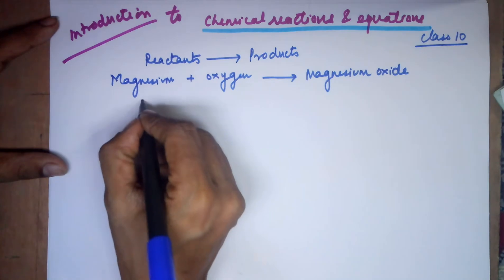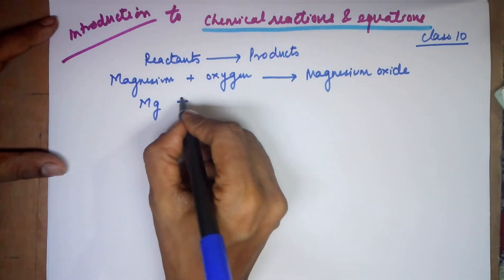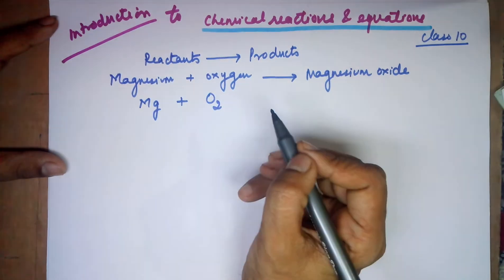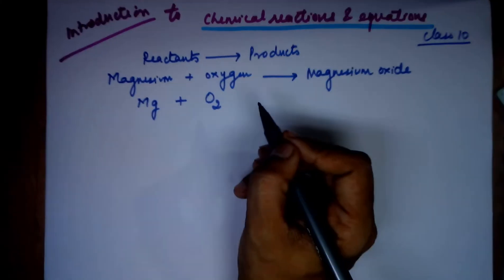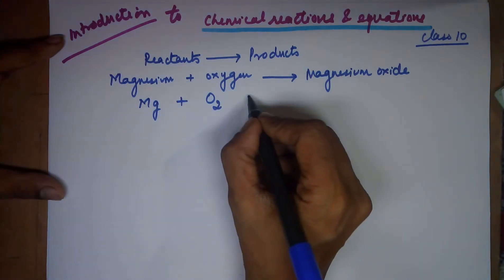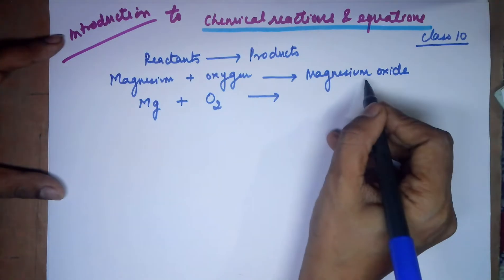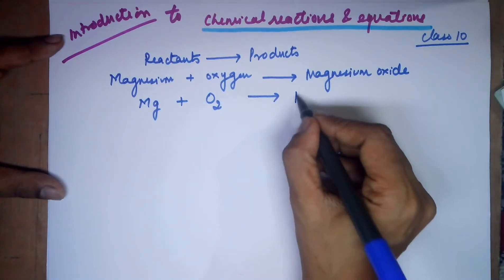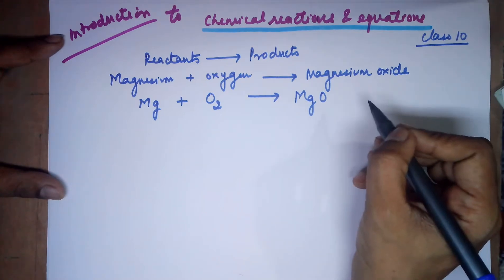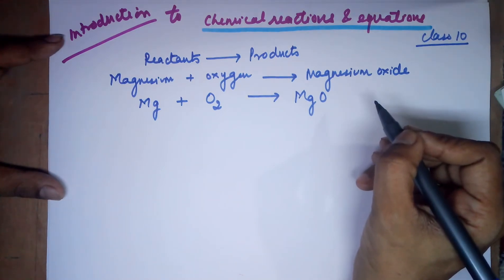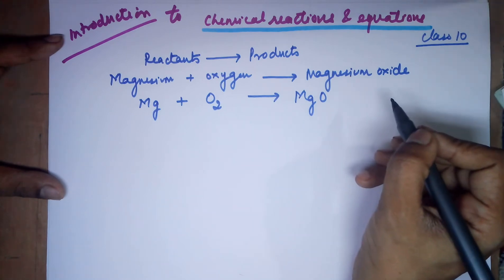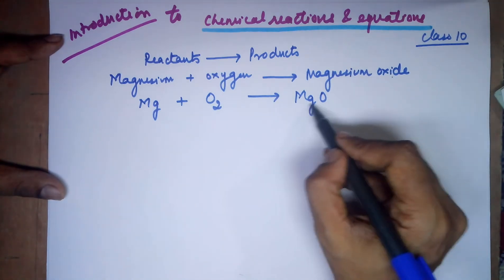For magnesium, you need to write it as Mg. Oxygen is a gas and it is always diatomic in nature, which means you need to mention it as O2. It leads to the product formation which is magnesium oxide. Magnesium has a valency of 2, oxygen also has a valency of 2. Interchanging the valencies, you end up with Mg2O2, and the 2s get cancelled as a common factor, so your formula for magnesium oxide becomes MgO.